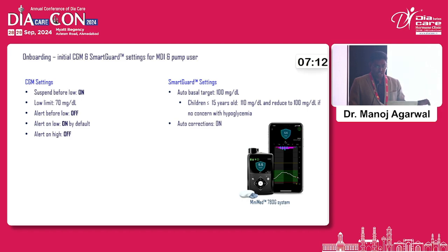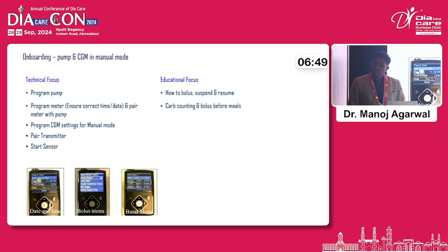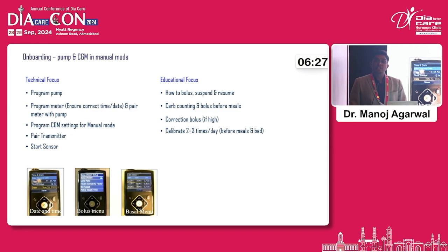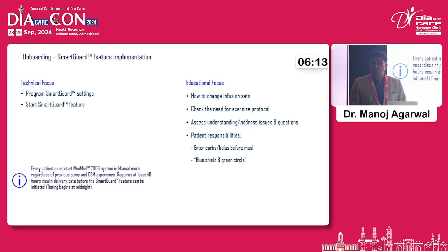From the educational part, what things must the patient learn? They need to learn how to give a bolus, how to suspend the insulin pump while going to the bath, and importantly how to resume — because many patients forget. If they don't resume, they will go into diabetic ketoacidosis. They need to calculate carbohydrates and announce the bolus. If blood glucose is high, they correct with insulin doses. With the older Guardian Connect 3 sensor, they need to do calibration, but with the newer Guardian Connect 4, calibration is not needed unless the pump asks. Patients must also regularly change the infusion set.